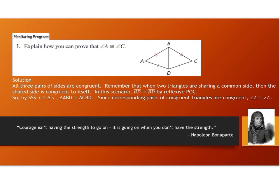Your explanation should include that all three pairs of sides are congruent. Any time two triangles are sharing the same side, by the reflexive property that side is congruent to itself. Side BD is congruent to BD by the reflexive property of congruence. So by side-side-side, which implies congruent triangles, we can conclude that triangle ABD is congruent to triangle CBD. Since corresponding parts of congruent triangles are congruent, angle A is congruent to angle C.